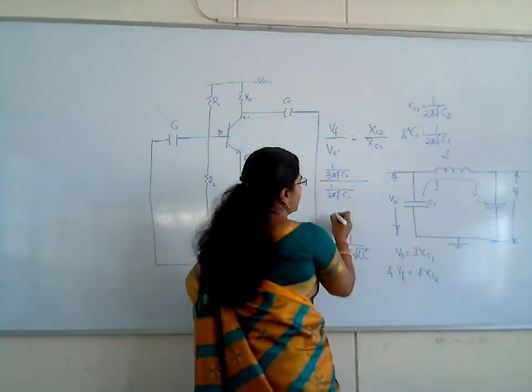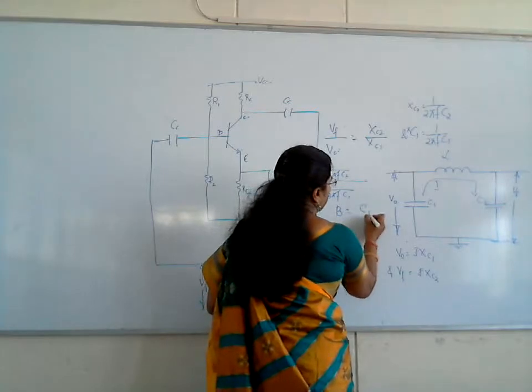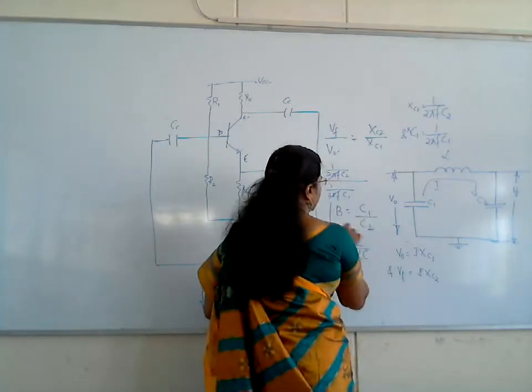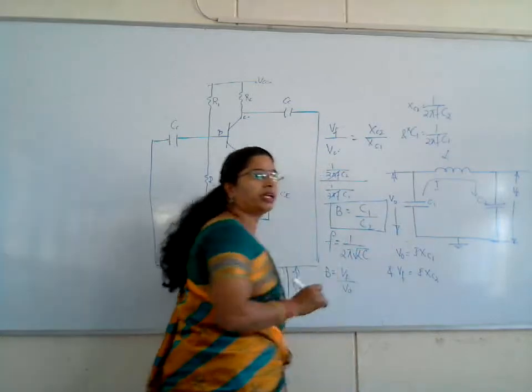The 2πf terms get cancelled, and we get the final value as β is equal to C1 by C2.